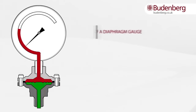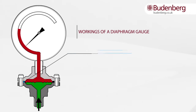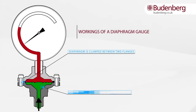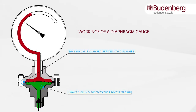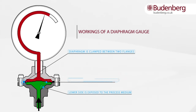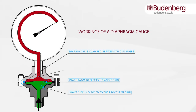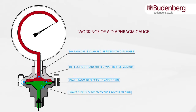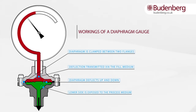The diaphragm is a flexible membrane clamped between two flanges and is circular, the lower side of which is exposed to the process medium. As the diaphragm deflects up and down from the process positive and negative pressure, the deflection of the diaphragm is transmitted via the fill medium to the pressure gauge, which displays the pressure on a dial.